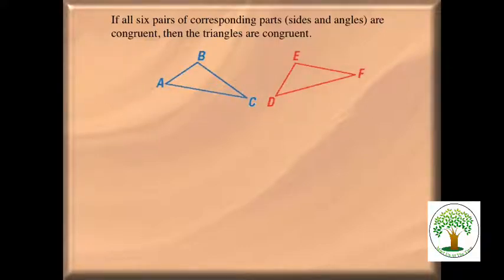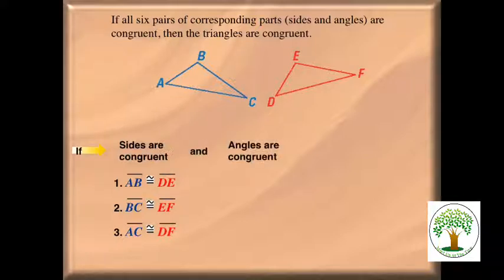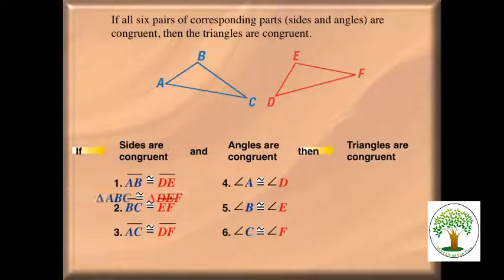That would mean I'd have to make sure AB is congruent to DE, BC congruent to EF, and AC congruent to DF — with the small, medium, and large sides. I'd also have to prove all angles are congruent. That's six things to prove before writing a congruence statement. There's got to be a shorter way.